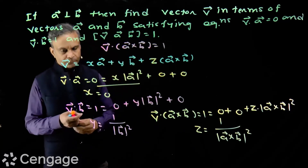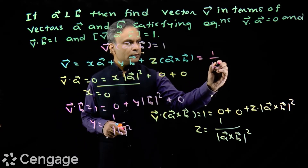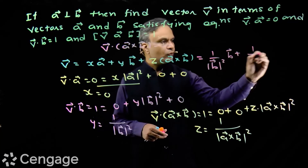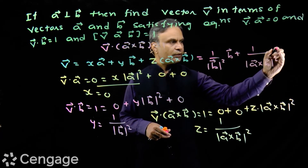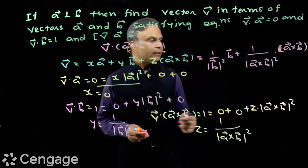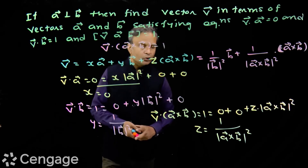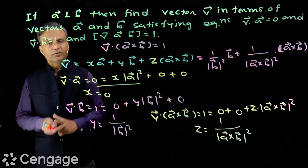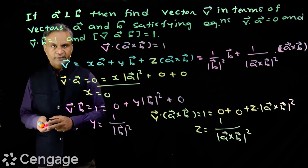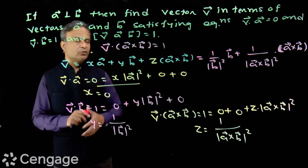Now we put the values of x, y, z back. We get vector v equal to: one over square of modulus of b into b, plus one over square of modulus of a cross b into vector a cross b. So we have vector v in terms of vectors b and a cross b. Using two non-collinear vectors a and b, we can define a space with the third vector a cross b. If two vectors are given as non-coplanar, we take the third vector as a cross b, define the space, and write any arbitrary vector as a linear combination of these three vectors.